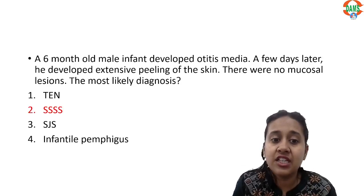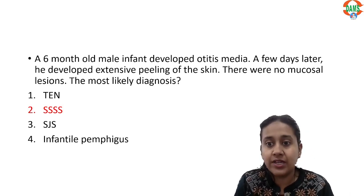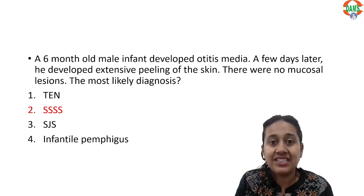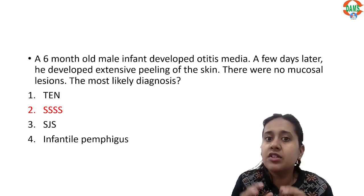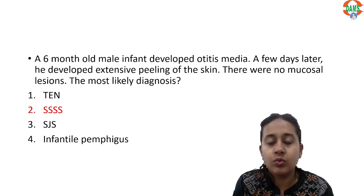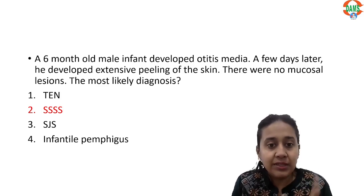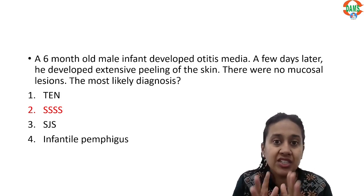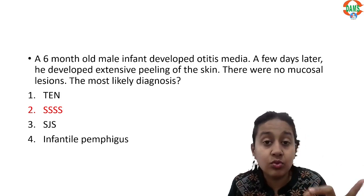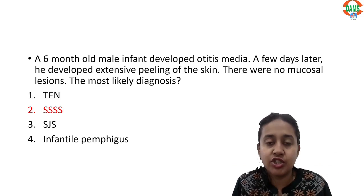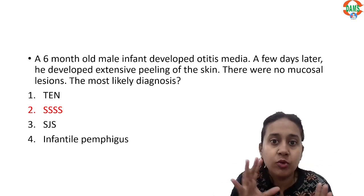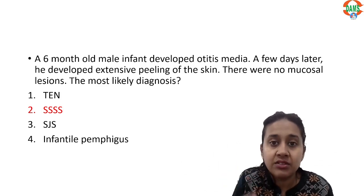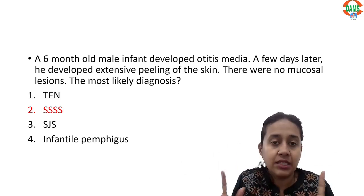The next question: a six-month-old infant develops otitis media, and then develops extensive peeling of the skin with no involvement of the mucosa. What is the likely diagnosis? If a patient has no mucosal lesion and extensive peeling, this rules out a drug reaction, because in drug reactions mucosal involvement is a must. So option number one, toxic epidermal necrolysis, and option number three, Stevens-Johnson syndrome, can easily be ruled out.